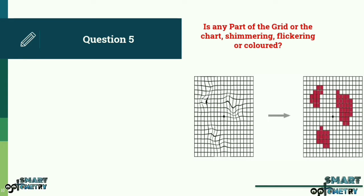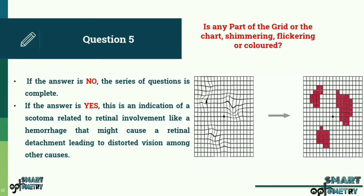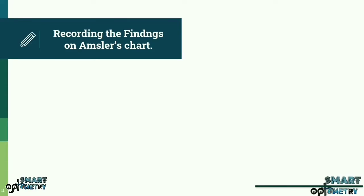Question 5: Is any part of the grid or the chart shimmering, flickering or colored? If the answer is no, the series of questions is complete. If the answer is yes, this is an indication of a scotoma related to retinal involvement like a hemorrhage that might cause a retinal detachment leading to distorted vision among other causes.